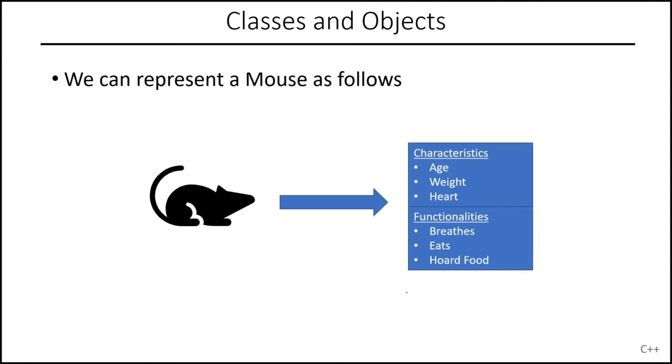Here's a mouse. Doing the same thing, a mouse also has an age, has a weight, has a heart. Functionality is it can breathe, it can eat, and they like to collect a bunch of food. They like to get a bunch of food, roll it up somewhere, and they have food just in case they are not able to find food later on. So that's a functionality that they can do.